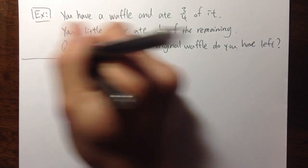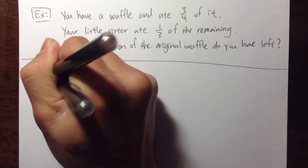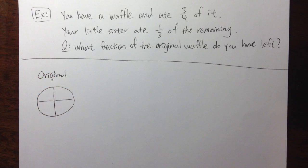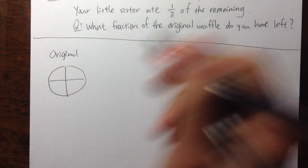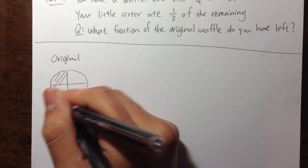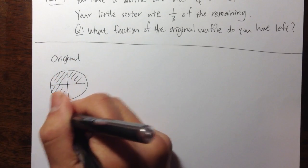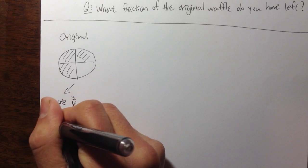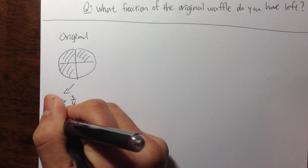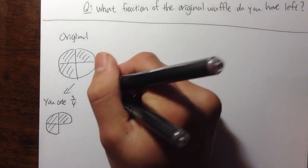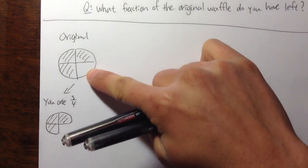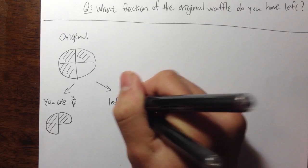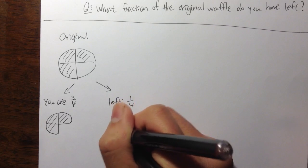Let me put this into pictures. So originally, you have a waffle. A waffle is usually divided into four pieces. You ate three quarters of it, so you ate this part, this part, and that part. You ate three quarters of the original waffle. What's the remaining? You have this one piece left, which is one out of four — one quarter. That's the remaining portion of the waffle.